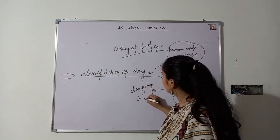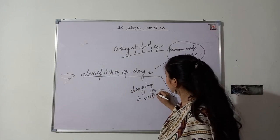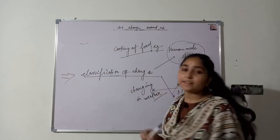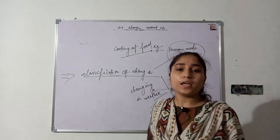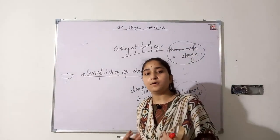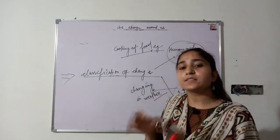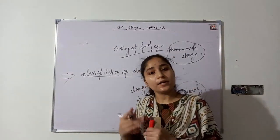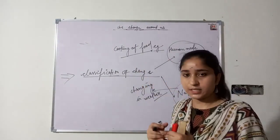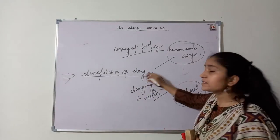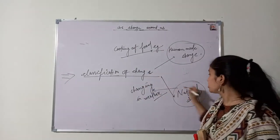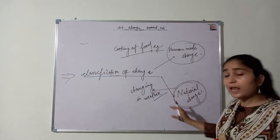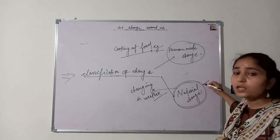Natural change — such as changing in weather. Weather conditions like rain and moisture are under the control of nature. So this classification of change is referred to as natural change.